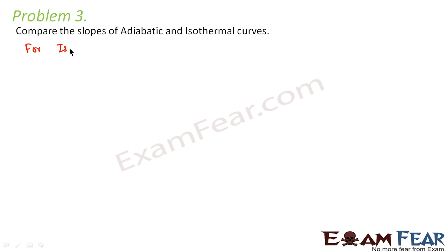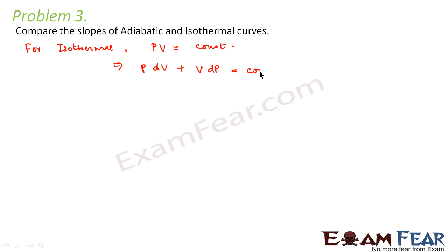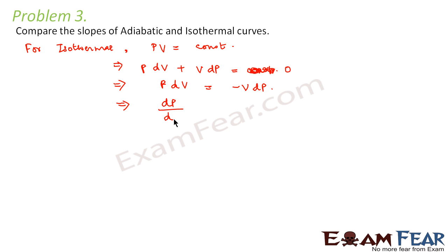Let us start with the isothermal process. For an isothermal process, the equation for any ideal gas is PV = constant. Differentiating, we get P·dV + V·dP = 0. Please refer to your lesson on differentiation for the detailed steps. So from this we get dP/dV = −P/V.